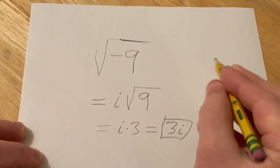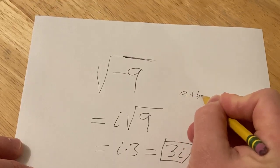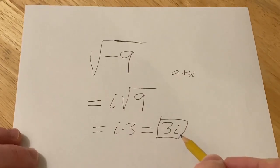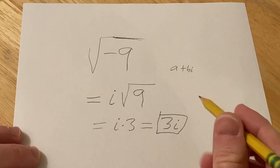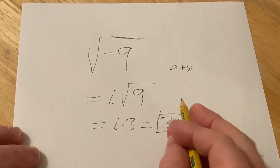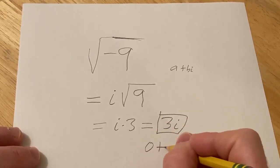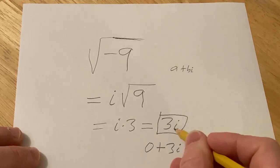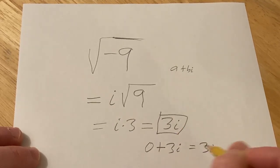A lot of times the directions will say write in the form a plus bi. And we've basically done that. When you have it like this, it's written in this form. You might say, hey, where's the a? Well the a is 0. This is really 0 plus 3i, which is the same thing as 3i because the 0 is not really there.